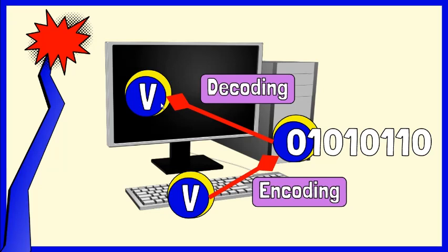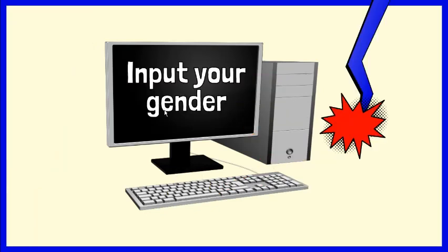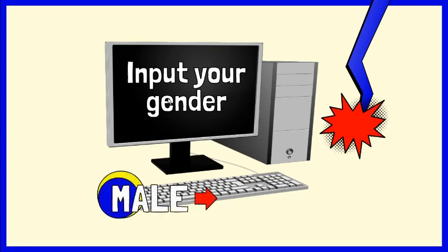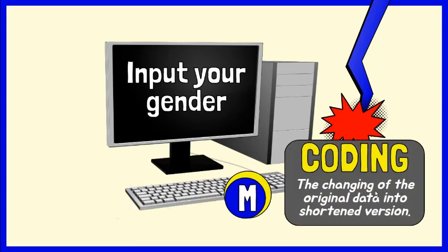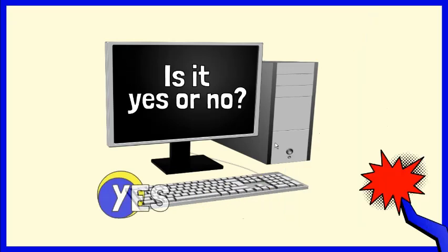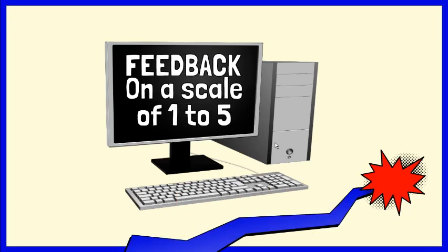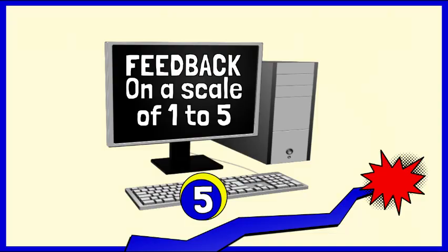To speed up the data entry and to save storage, some data is coded before it is entered into a computer. For example, when asking for a gender, instead of entering the word male or female, you can let the user input M or F. The changing of the original data into shortened version is what we call coding. When requiring a yes or no answer, the input can be coded to Y or N. Another example is when you would like to ask for feedback ratings from customers. They can use a scale of 1 to 5, 1 being poor and 5 being excellent. The single digit can be entered into a computer and the number makes it easy to analyze and compare data. Those examples show that coding categorizes information and can replace long description strings with a few letters or numbers or both.